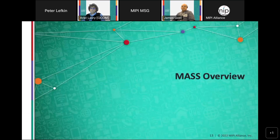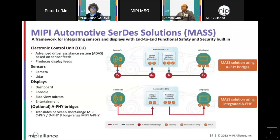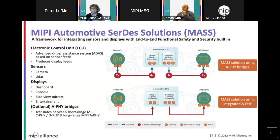MASS provides a framework for end-to-end automotive seller solution — from the sensor to the ECU and from the ECU to the display. It includes the AFI as well as the protocol for sensors and displays, and it supports both bridge AFI and integrated AFI configuration. MASS is present throughout the car, for example in automotive ECUs, ADAS or infotainment systems, and also in sensors such as camera, radar, or LiDAR, and of course in displays.